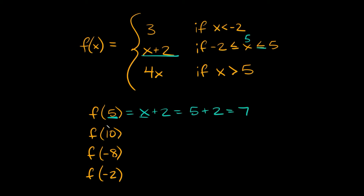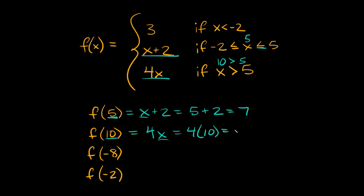5 plus 2 equals 7. Now let's try 10. Does 10 fit the first description? No. Does it fit the second — is it between negative 2 and positive 5? No. Does it fit the last description? Is 10 greater than 5? Yes. So we use the third function, 4x. f of 10 equals 4x, and plugging in 10 gives us 4 times 10, which equals 40.